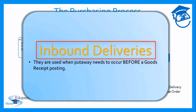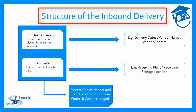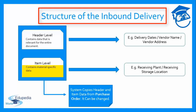Looking at the structure of the inbound delivery, it is divided into two levels: the header level and the item level. The header level contains data valid for the entire transaction — for example, vendor details, address data, contact details, and the delivery date, which remain constant throughout the document. At item level we find the materials included in the delivery, where each material can contain its own unique data such as receiving plant and storage location.